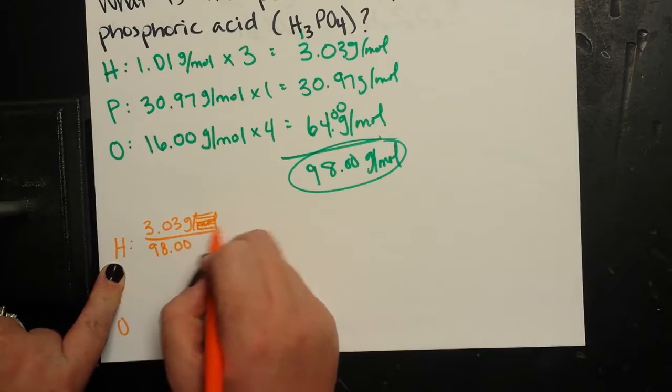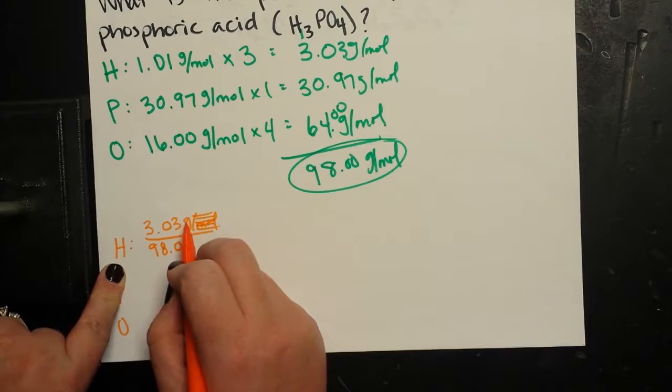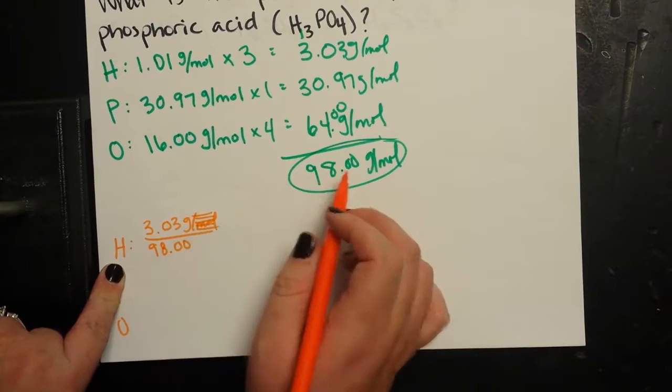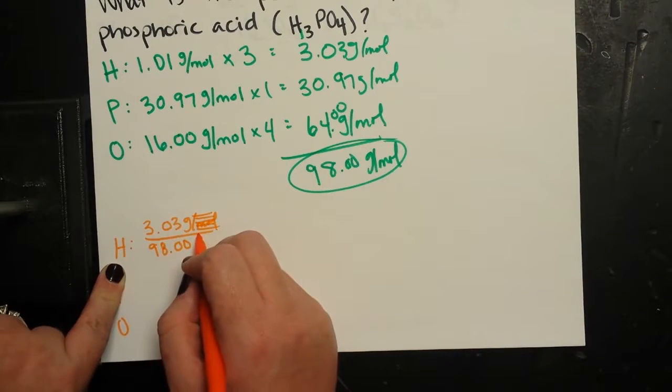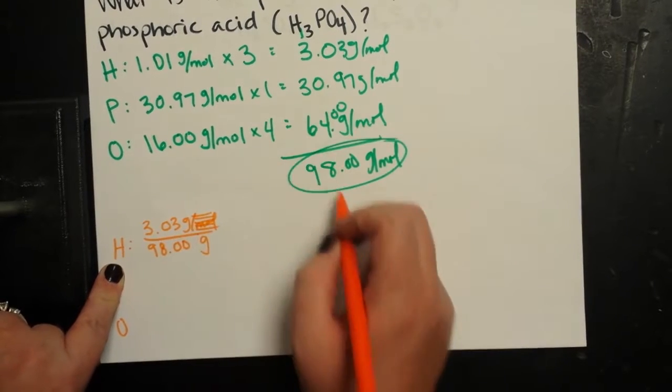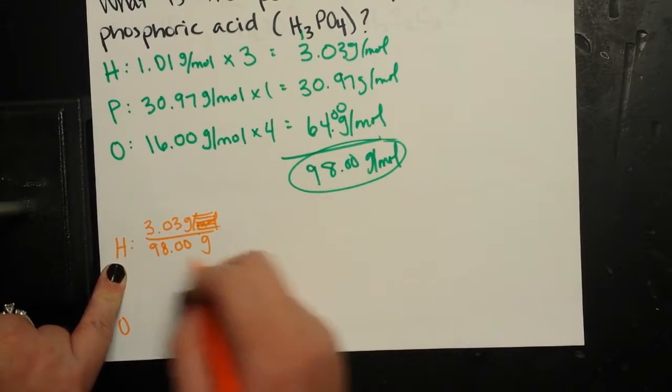We're just going to assume, I like to do this because I don't like to always put the grams per mole. I like to just assume one mole and say that many grams for hydrogen out of one mole of this would weigh 98 grams.